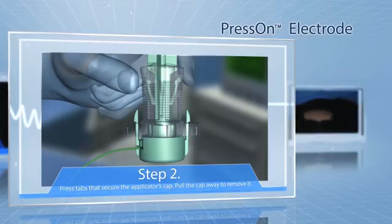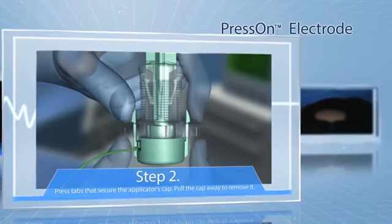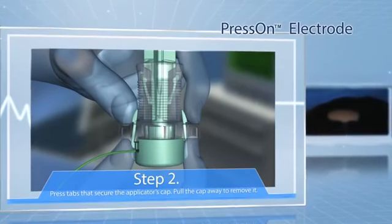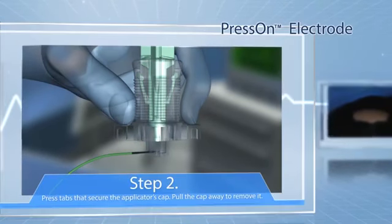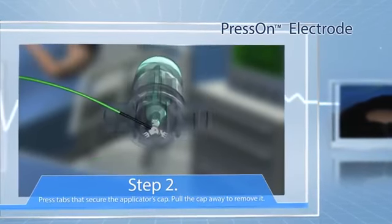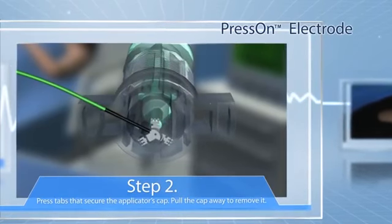Step 2: Using your thumb and index finger, press tabs that secure the applicator's cap. Pull the cap away from the applicator to remove it. The press-on electrode is now visible and ready to be launched. Discard the cap.